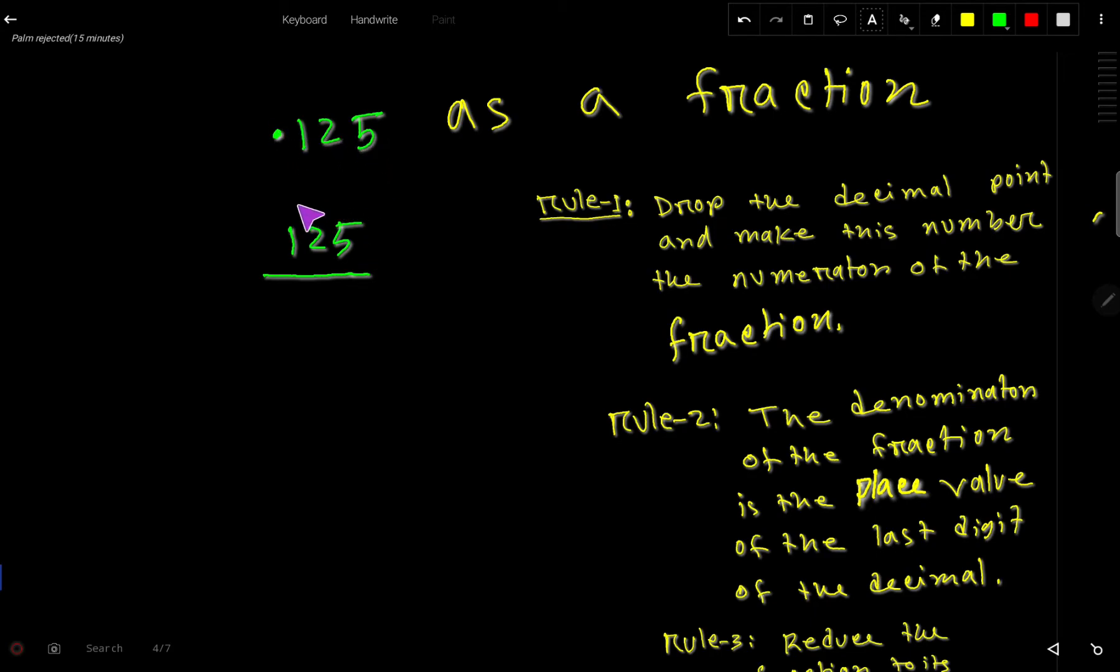After dropping the decimal point we get 125, so this is the numerator. For the denominator, we target the last digit and its place value. Here we have tenths place, hundredths place, and thousandths place, so we write 1000. This is the fraction form.